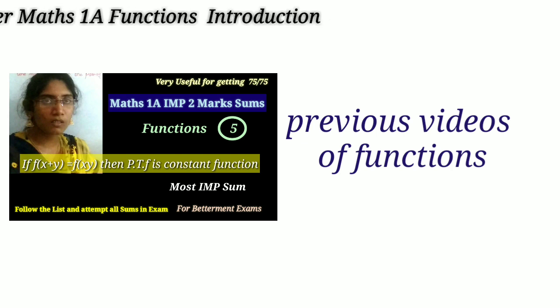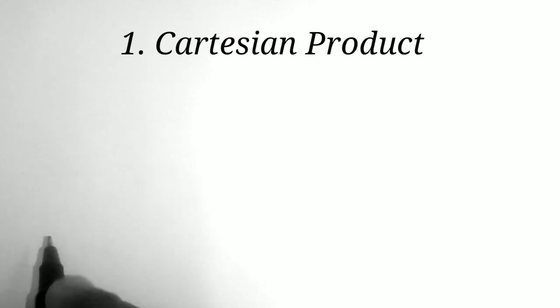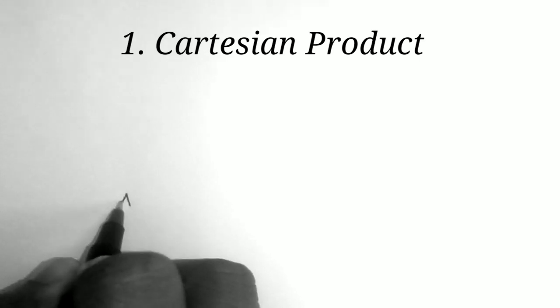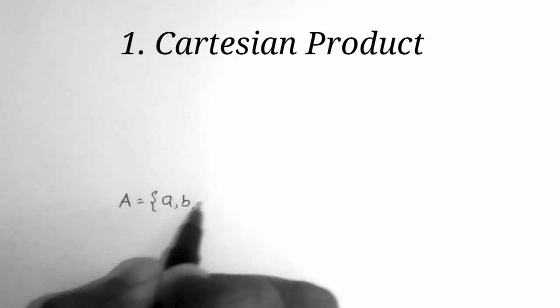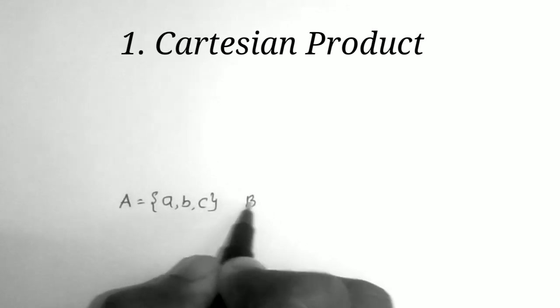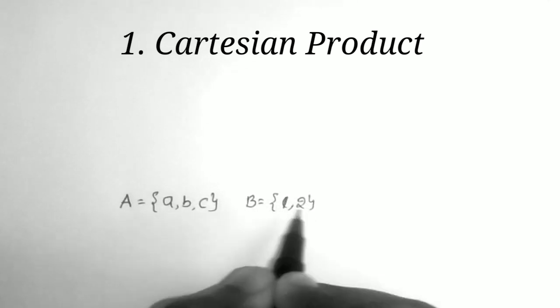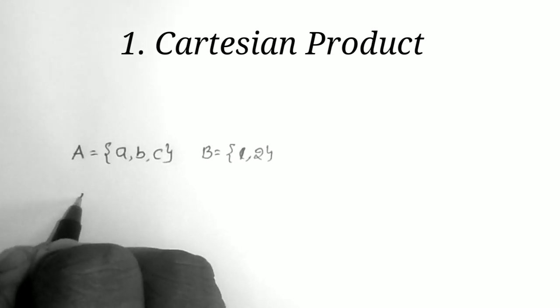The first definition is Cartesian Product. So first I take here two sets A and B. Set A is equal to {a, b, c} and set B is equal to {1, 2}. These are the two sets.